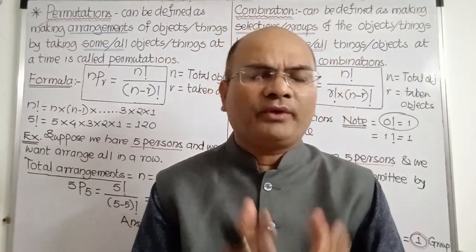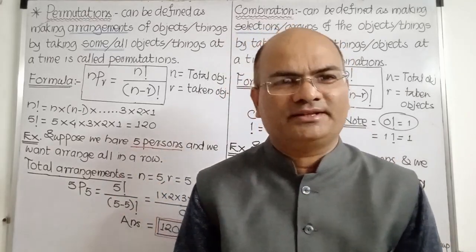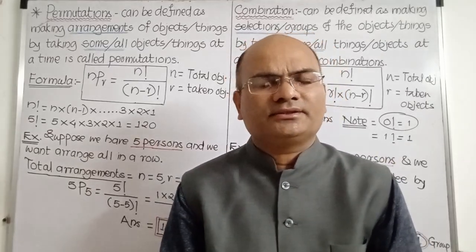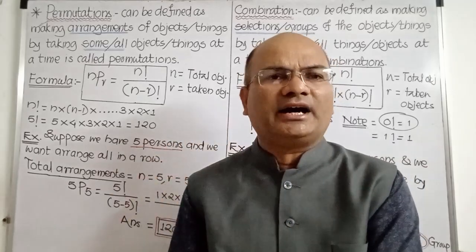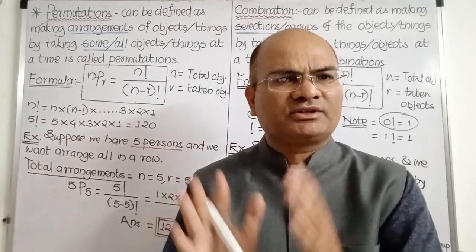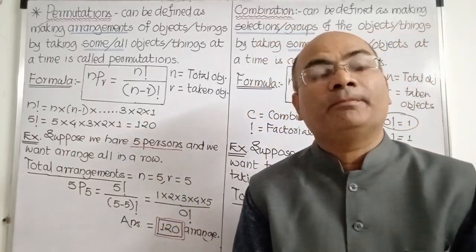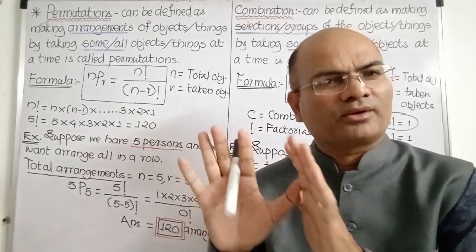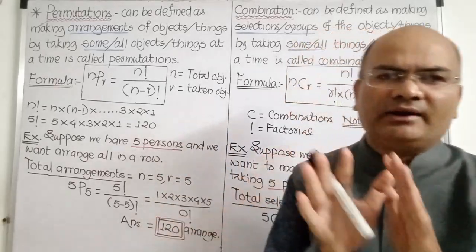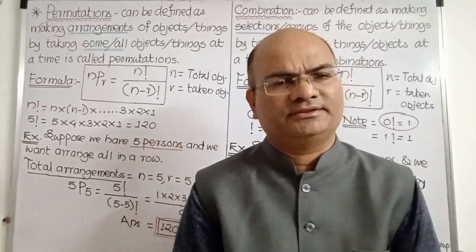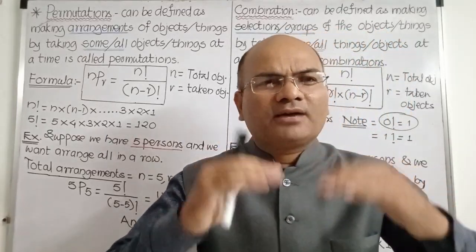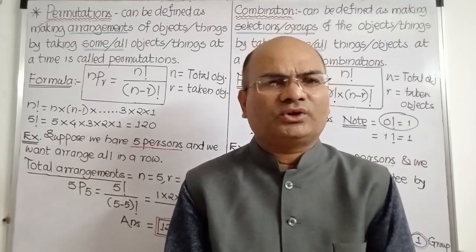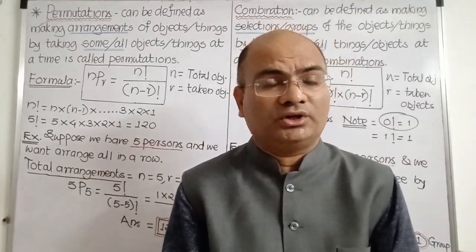Students often ask where to apply permutations and where to apply combinations. To clarify: permutations means arrangements of objects, and combination means selections of objects or making groups. Whenever we are arranging objects, use the permutation formula. When going for selections of objects, use the combination formula. Knowing the keywords is very important since in exams there is limited time.